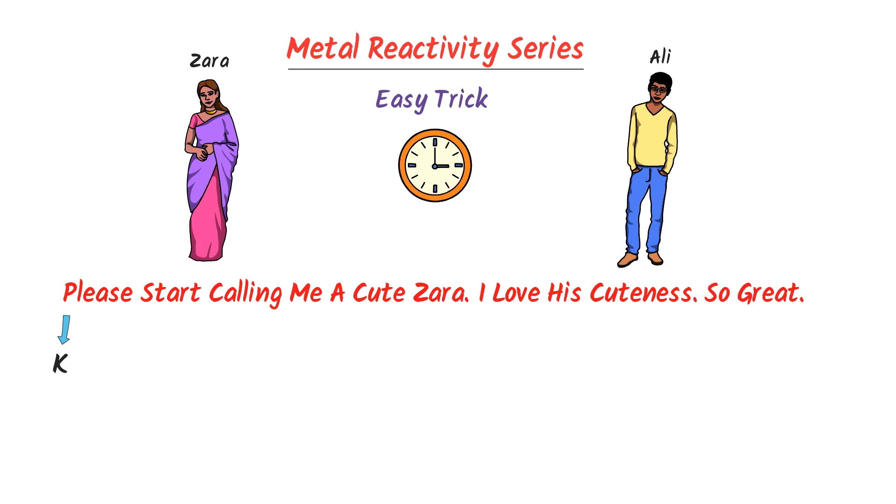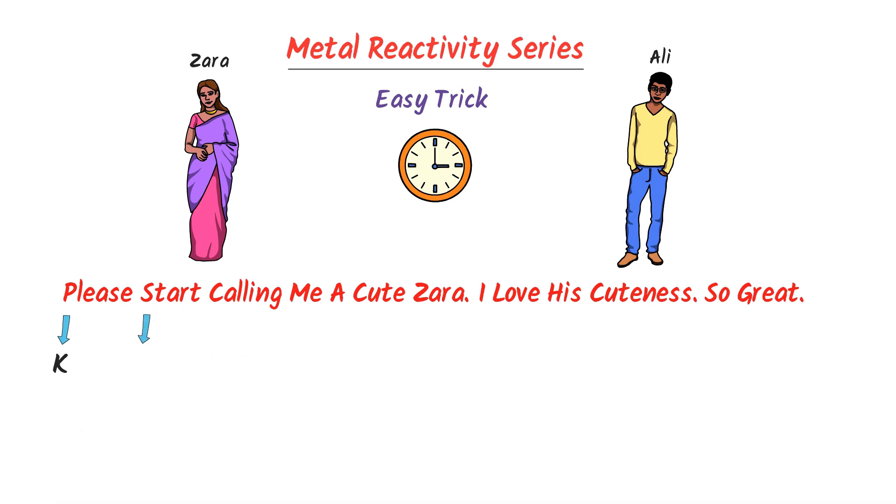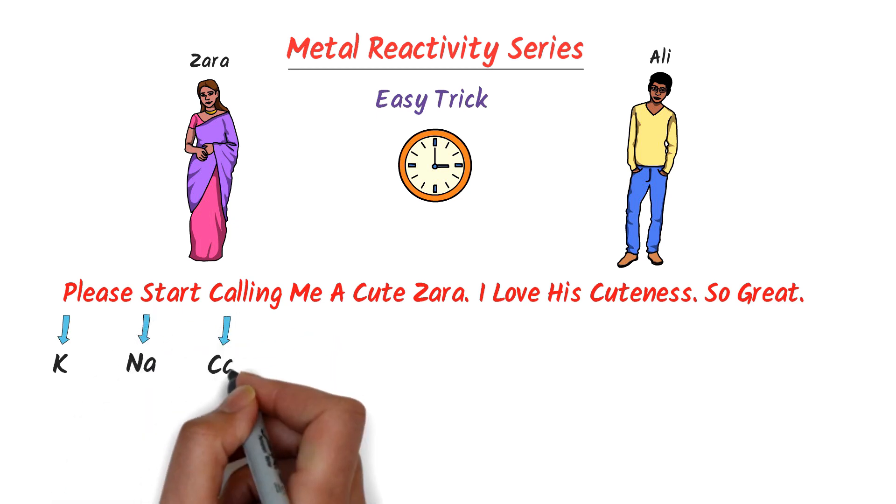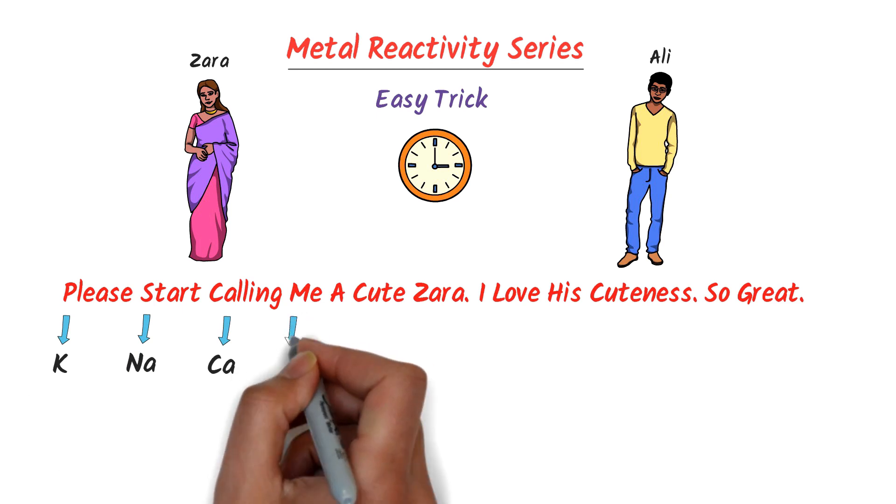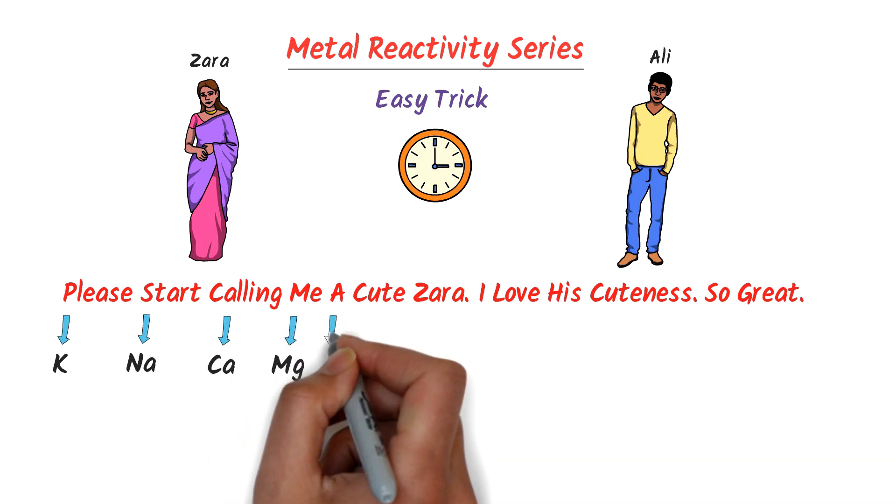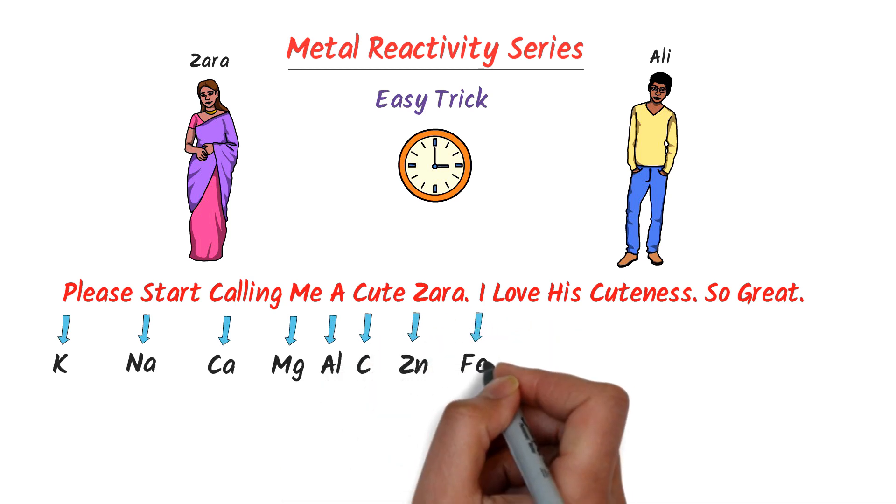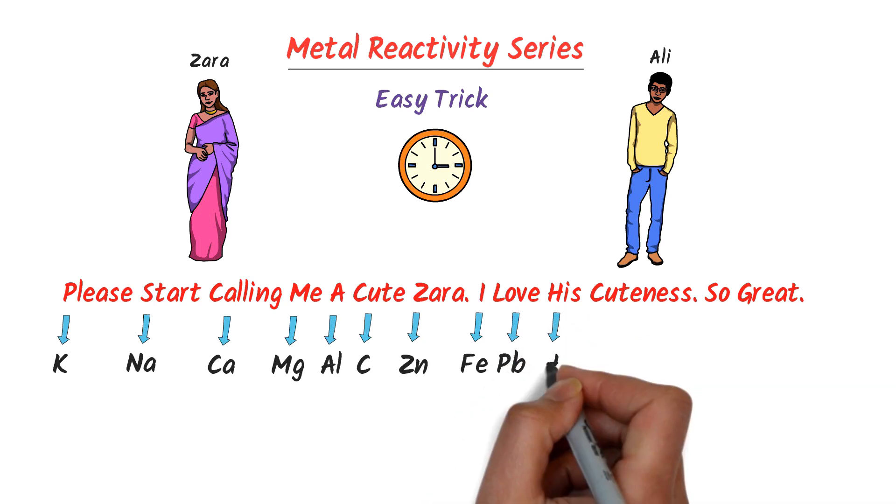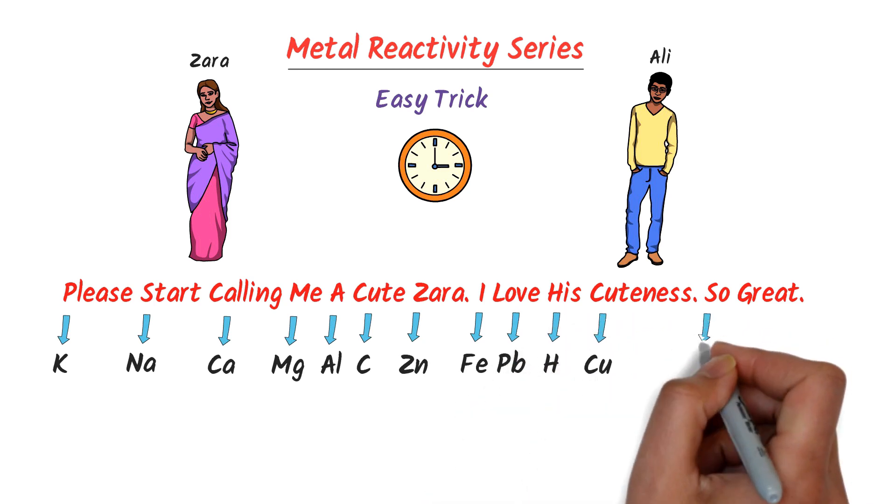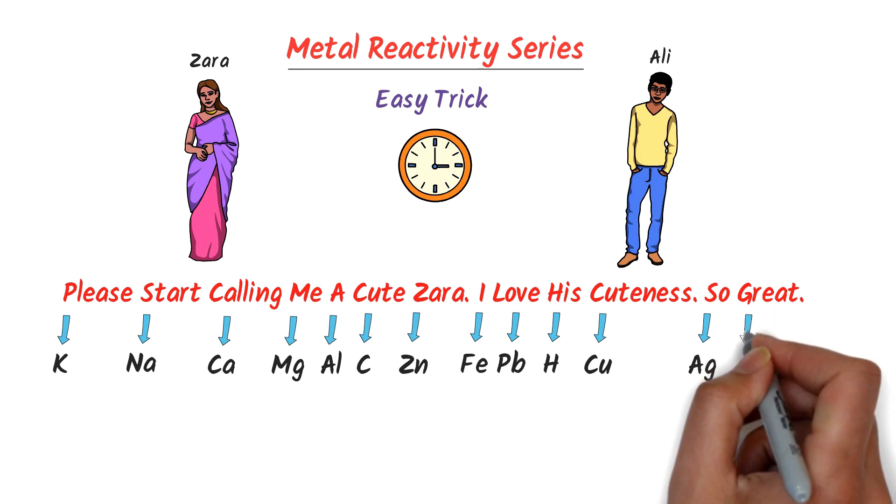Here, P stands for potassium, S stands for sodium, C A stands for calcium, M stands for magnesium, A stands for aluminium, C stands for carbon, Z stands for zinc, I stands for iron, H stands for hydrogen, C stands for copper, S stands for silver, and G stands for gold.